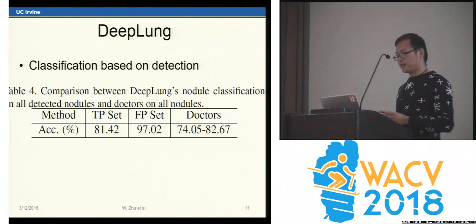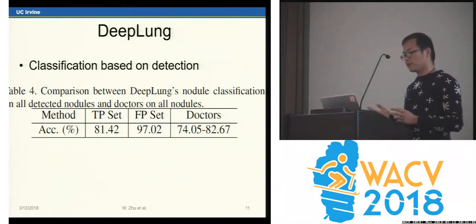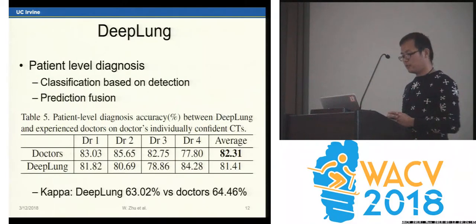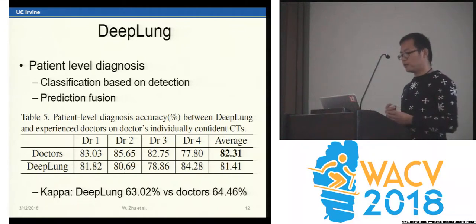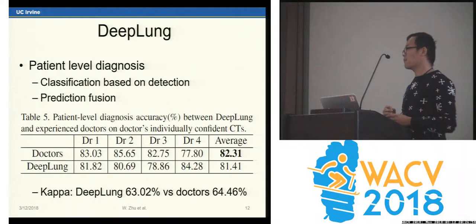On the true positive detection set, DPN performance is within the doctor's performance range. We also calculate the patient-level diagnosis performance based on doctor individually annotated CT scans. DPN is comparable with the doctor.